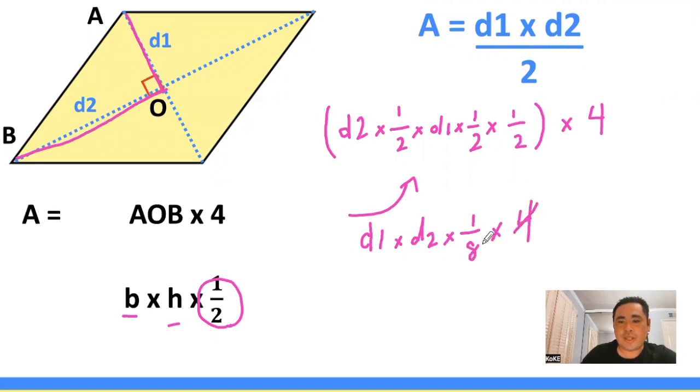And you can notice that the 4 and the 8 will cancel. And then you are left with the rhombus formula.